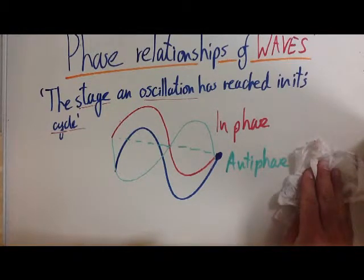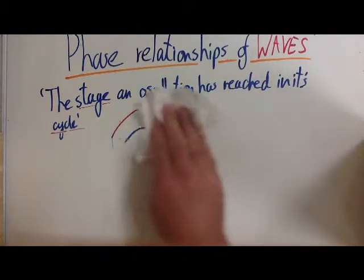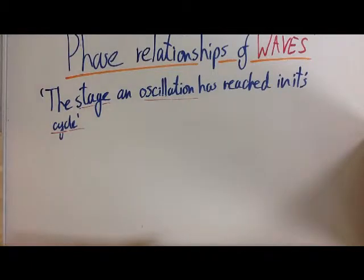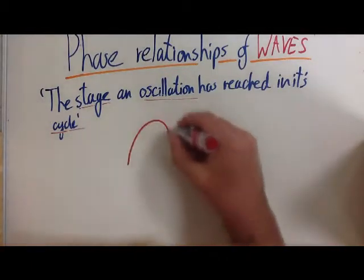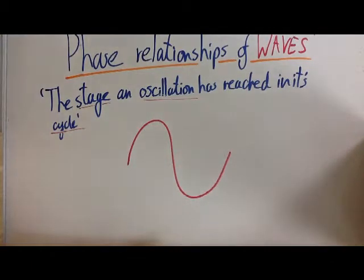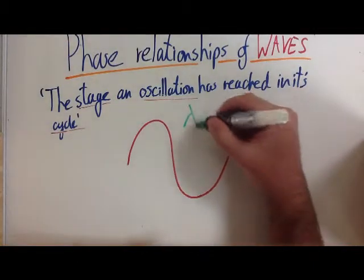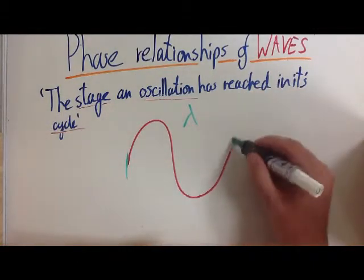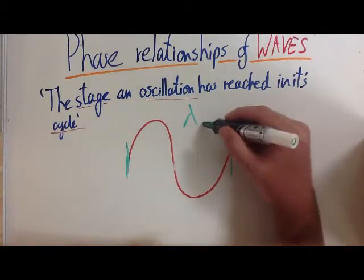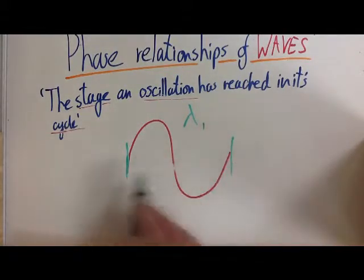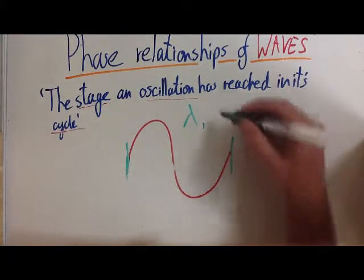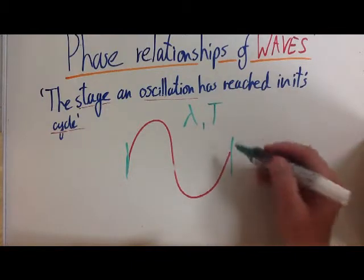So before we have another look at that, let's look at describing what one wave is equal to. Or in terms of describing one wave. So we all know that that's a wavelength. That point from here to here is one wavelength. But we can also describe it in terms of the time, the length of time that one wave takes. This is known as the period, which has the symbol T.